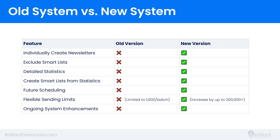You'll also be able to create smart lists based on those statistics to target specific recipients in future newsletters. For example, you can send out a newsletter, make a smart list of recipients who opened that email, and then send another newsletter to that list with a special offer. Or make a smart list of recipients who didn't open the initial email and send them an alternate email employing a different strategy.